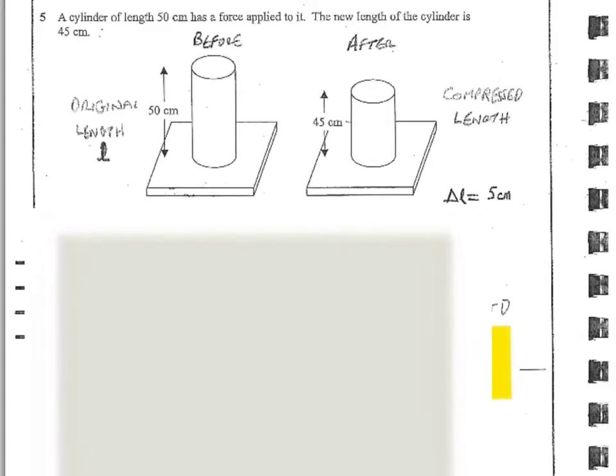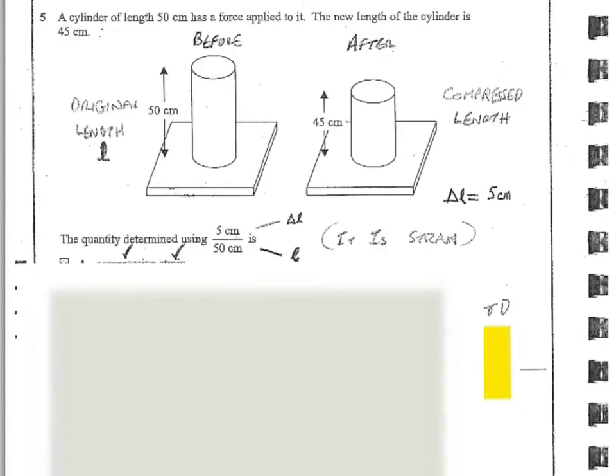Question 5. A cylinder of length 50 centimeters has a force applied to it. And the new length of the cylinder is 45 centimeters. So this is what we're looking at here. Originally it was long, after the force was applied it got shorter. So this is clearly a compression that's going on. And it says the quantity determined using 5 centimeters over 50, which is if you look carefully, that's going to be the delta L, because this changes by 5, over the original length L here. So delta L over L is strain. So this is a strain.